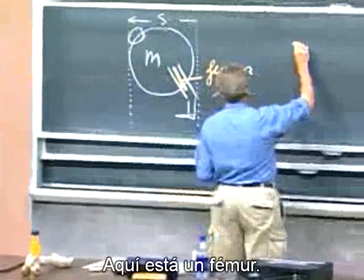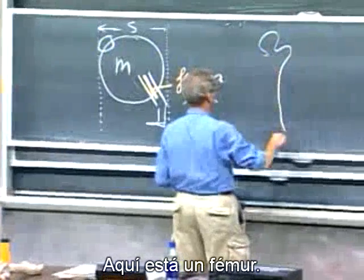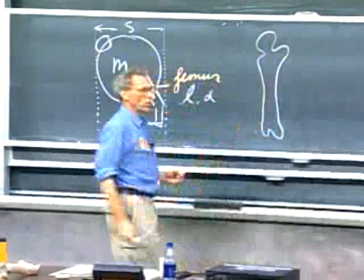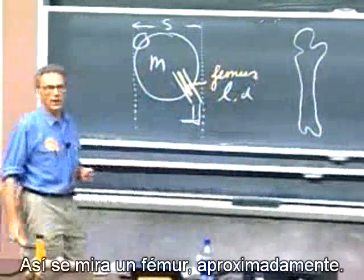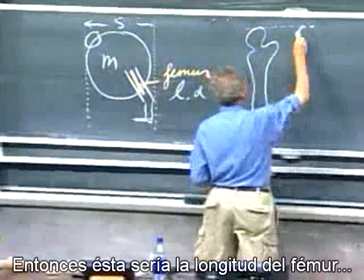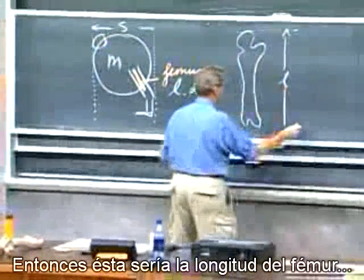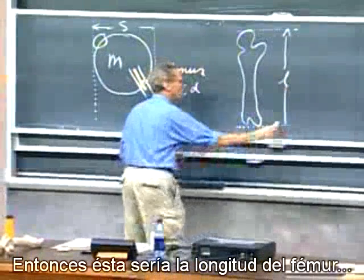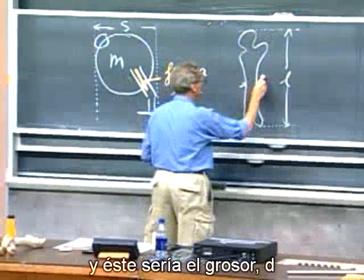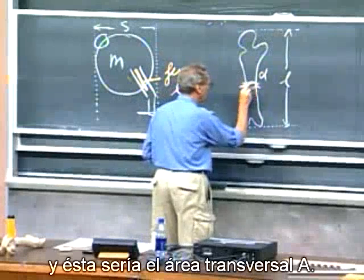Here is a femur — this is approximately what a femur looks like. This would be the length L of the femur, this would be the thickness D, and this would be the cross-sectional area A.